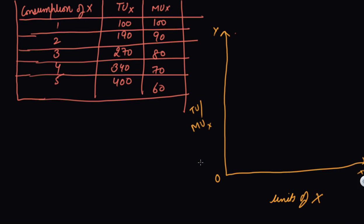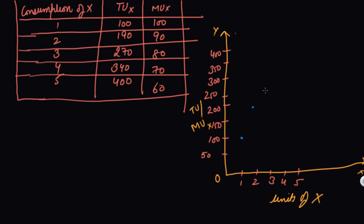Let's take the Y-axis on a scale of 50, 100, 150, 200, 250, 300, 350, and 400. On the X-axis, take units 1, 2, 3, 4, and 5. Let's first plot the total utility. At unit 1, you get total satisfaction of 100 utils. At unit 2, you get 190 — somewhere here. At unit 3, you get 270 — somewhere here. At unit 4, you get 340 — somewhere here. At unit 5, you get 400 — somewhere here. Draw the graph — this is your total utility graph.